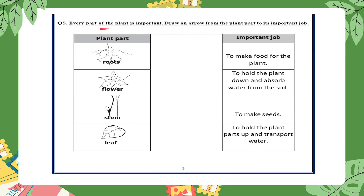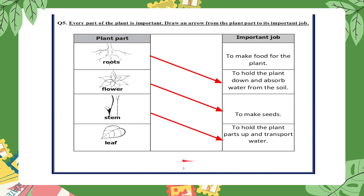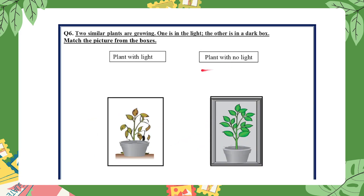The plant parts are: roots, flower, stem, and leaf. The job of the roots is to hold the plant down and absorb water from the soil. The flower is to make seeds for the plant. The stem holds the plant parts up and transports water. The leaf is to make food for the plant.